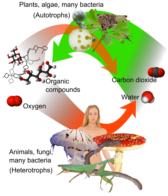Detritivores are heterotrophs which obtain nutrients by consuming detritus — decomposing plant and animal parts as well as feces. Saprotrophs, also called lysotrophs, are chemoheterotrophs that use extracellular digestion in processing decayed organic matter, a term most often associated with fungi. The process is most often facilitated through active transport via endocytosis within the internal mycelium and its constituent hyphae.